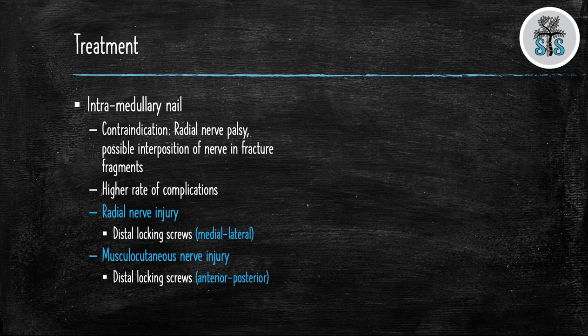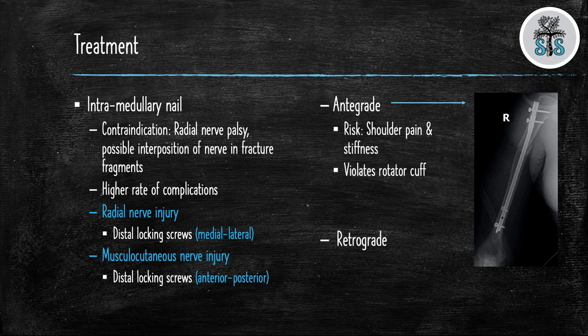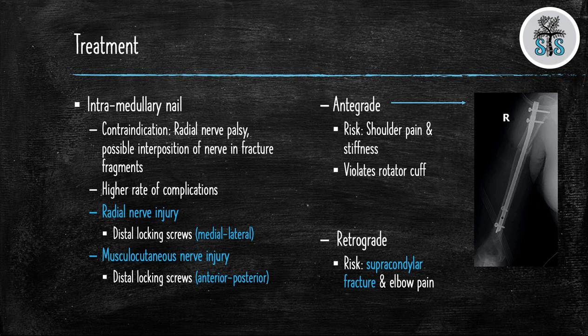There are two ways of placing your nail, antegrade and retrograde. Antegrade violates the rotator cuff and can cause shoulder pain and stiffness. Retrograde nails have an increased risk of causing a supracondular fracture which is most common in young females with narrow medullary canals.